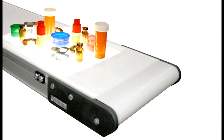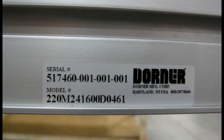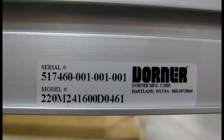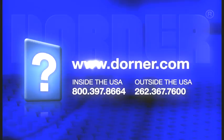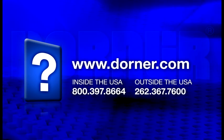Your 2200 conveyor is set up and now ready to perform. This concludes our video instruction. For replacement parts, contact your distributor or Dorner directly. Have your model and serial numbers ready. If you have any questions about Dorner or your conveyor, please contact us at www.dorner.com.